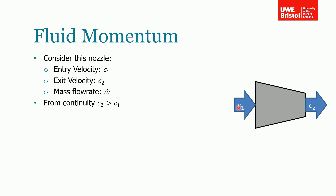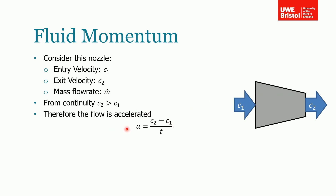Since the velocity is increasing as the fluid goes from point one on the inlet to point two on the outlet, it must be accelerating through the nozzle. We can calculate the acceleration: take the exit velocity (final velocity) minus the initial velocity, divided by the time it takes to travel from point one to point two.